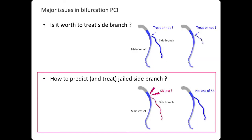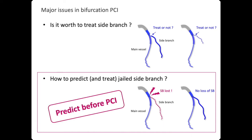I have nothing to disclose. There may be two major issues in bifurcation PCI. The first is: is it worth to treat the side branch? The second topic is how to predict and treat a jailed side branch before PCI, not during or after ballooning.